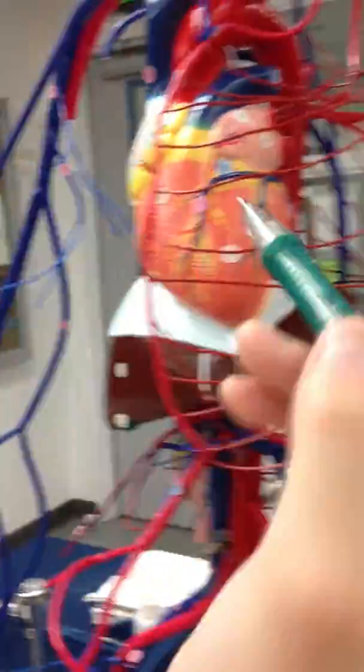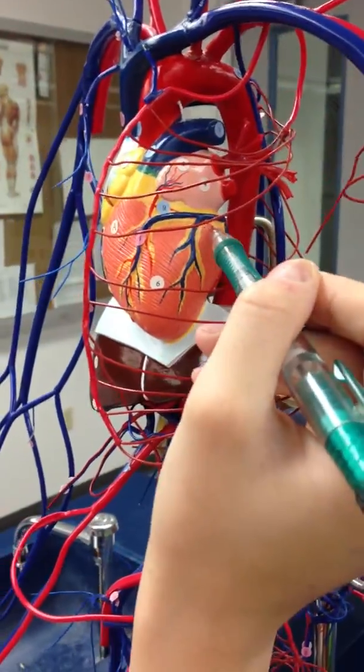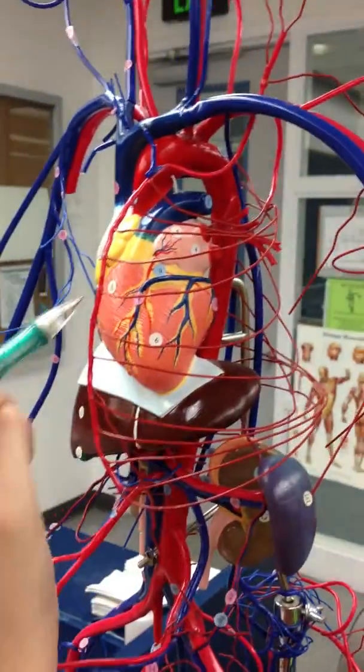The circumflex goes around back here, number 9, the red one, and the LAD is in the front, the red one.